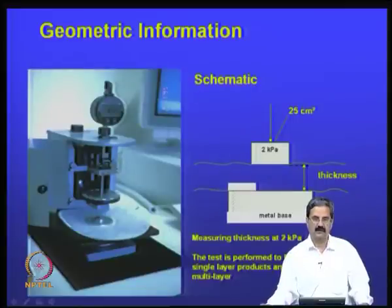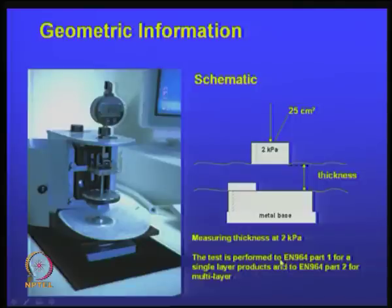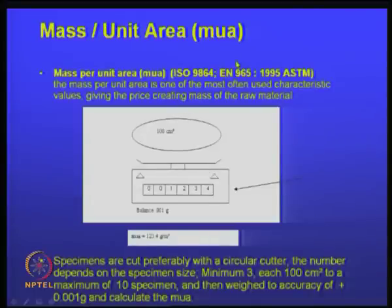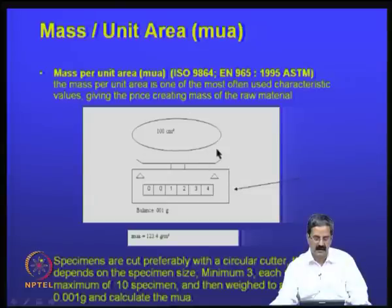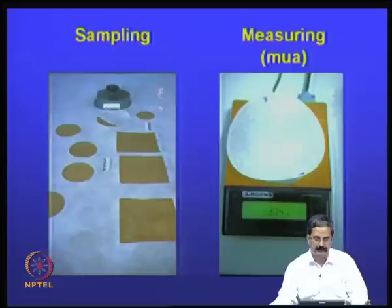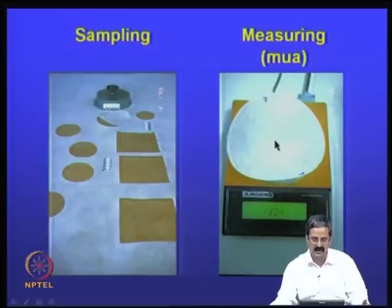The geometric properties are important because different materials have different thicknesses. Thickness is standardized at one pressure, at 2 kPa. We also need to know the mass per unit area, called MGA. Similar to how the quality of paper and silk is measured in terms of mass per unit area, we take small circular pieces of geosynthetic material, weigh them using a special cutter, and determine this property.